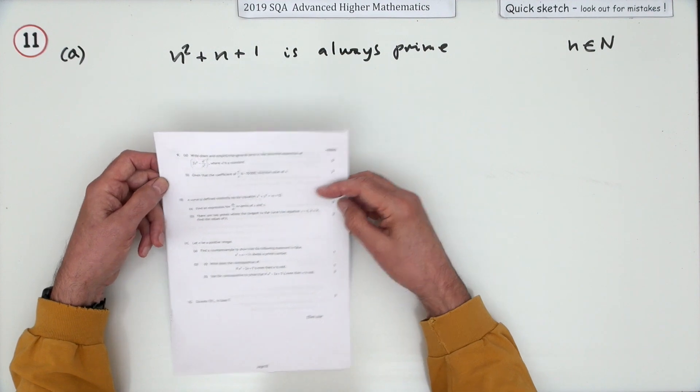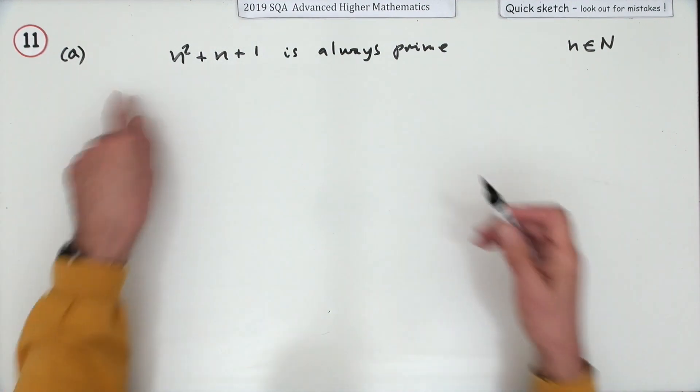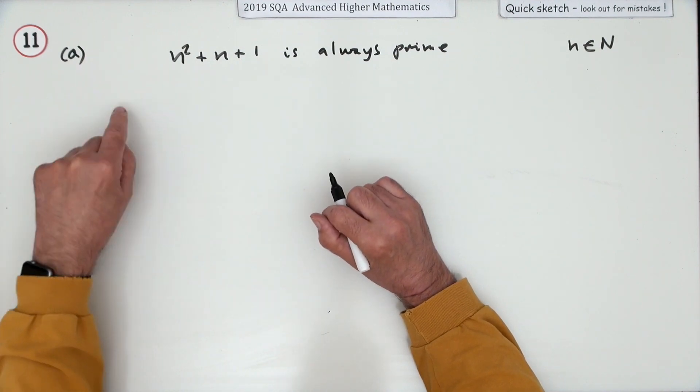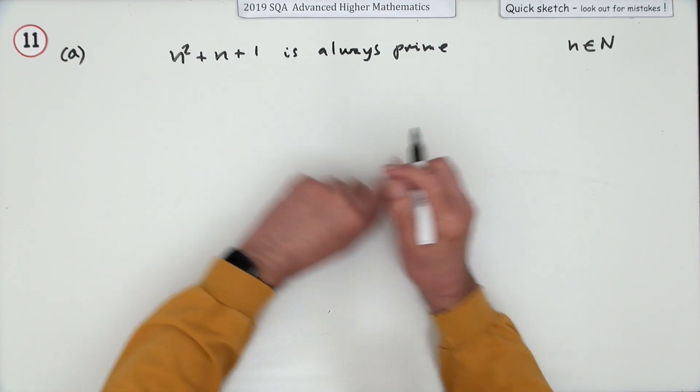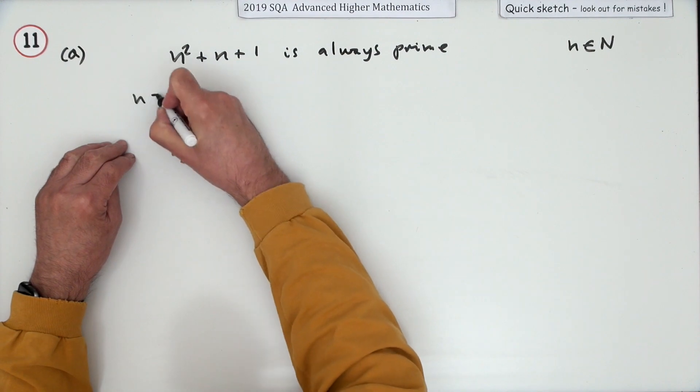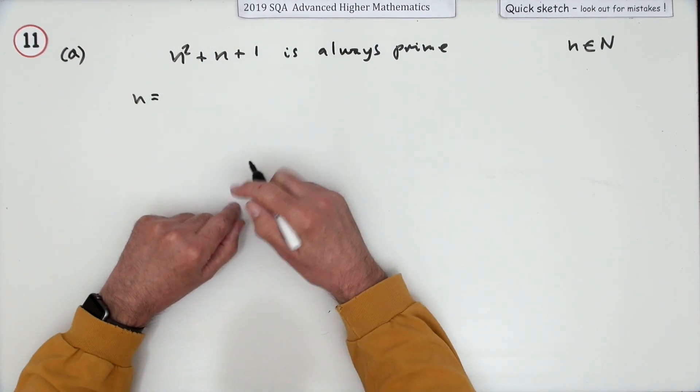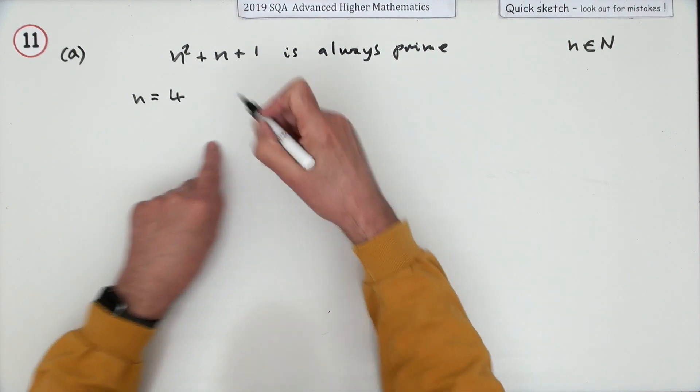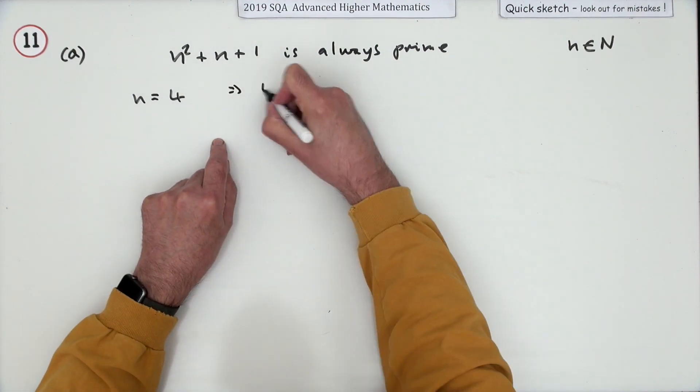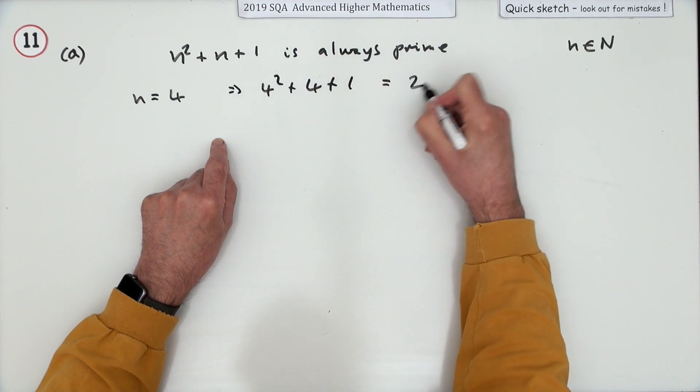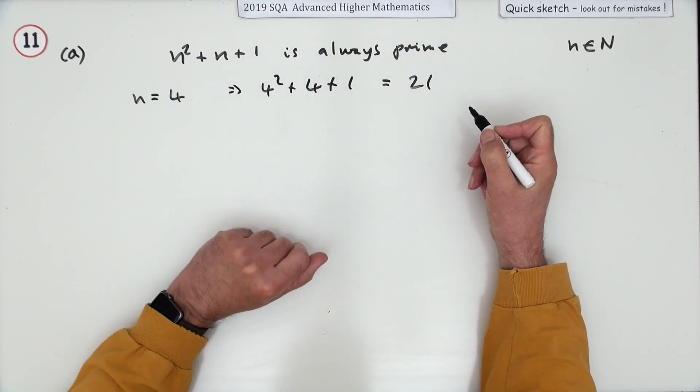It could be quite tricky proving things. It's just your luck whether you spot the number straight away or whether you want to plod through them one, two, three, four, five and so on. It's obviously not one: one and one and one is three, and three is prime. n equals four: what have you got? Four squared plus four plus one, sixteen plus five is twenty-one. Now twenty-one's not prime.